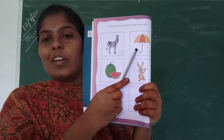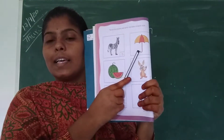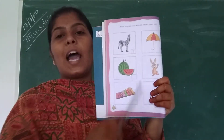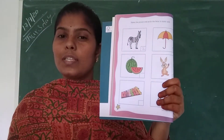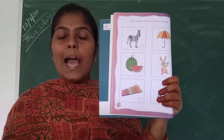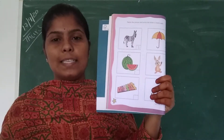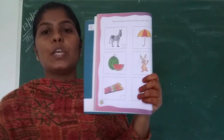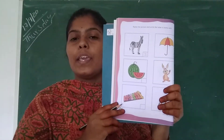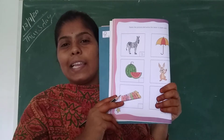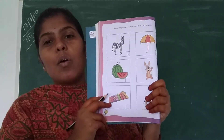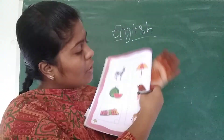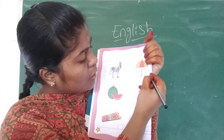What is this picture? It is umbrella. It is used when we go outside. It is used both in summer and in the rainy season. So what is the spelling of umbrella? U-M-B-E-R-L-L-A. What is the starting letter of umbrella? U. Write U here.